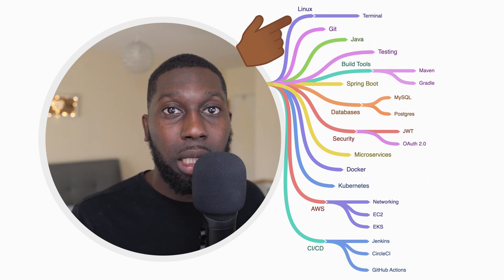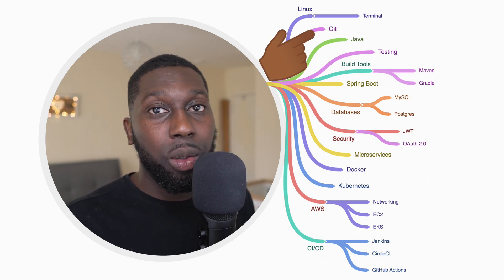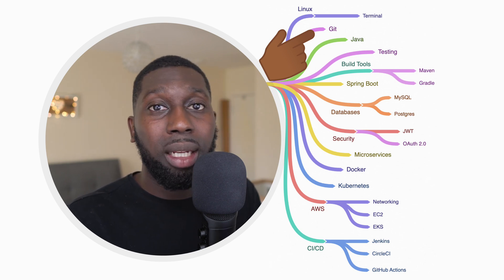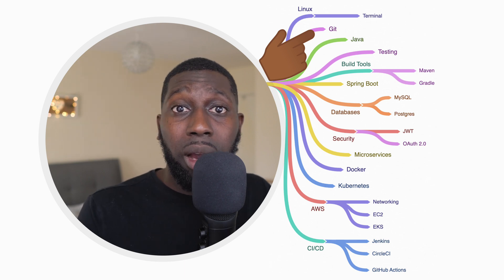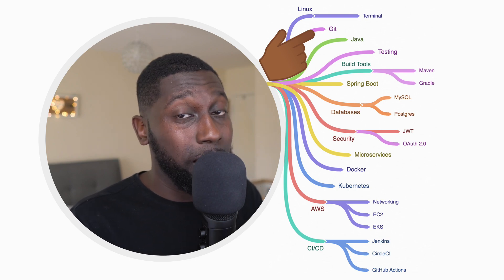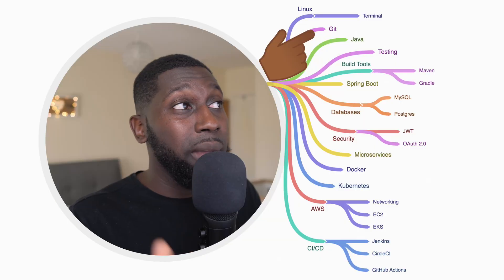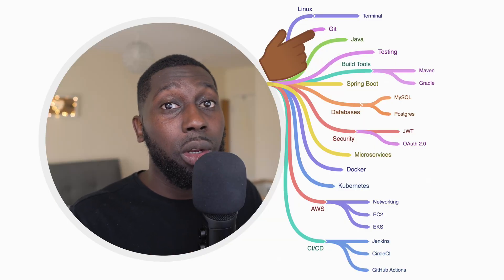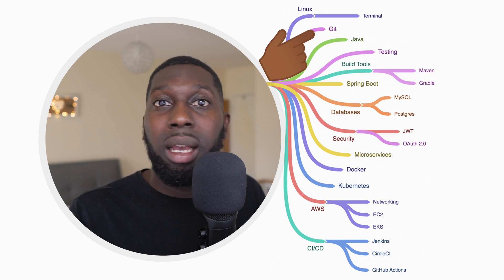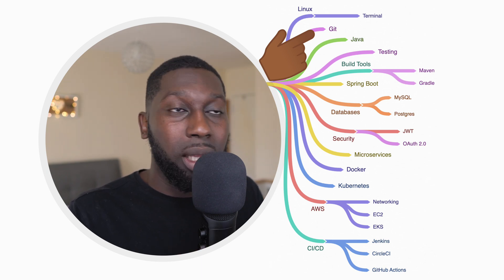Next we've got Git. This allows you to work in collaboration with other people. Often if you are working within a team, it's not just you but a bunch of developers getting together to write good quality software. Make sure that you know how to use Git — understand branches, commits, how to revert, and all of that stuff.